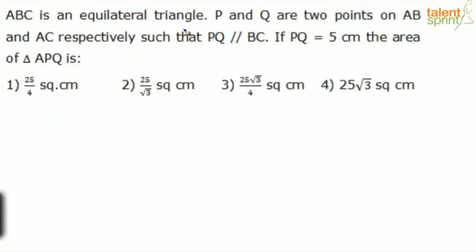The question says ABC is an equilateral triangle. P and Q are two points on AB and AC respectively such that PQ is parallel to BC. If PQ is 5, the area of triangle APQ is.